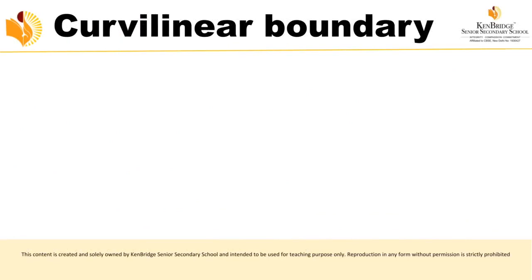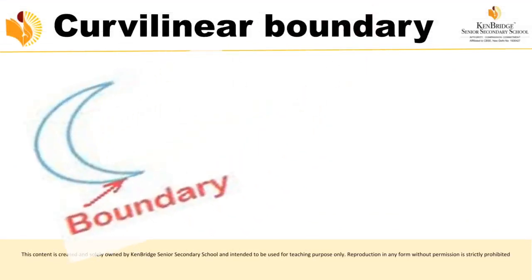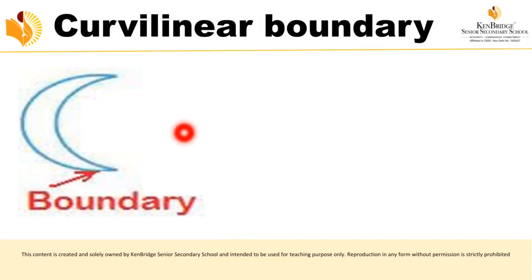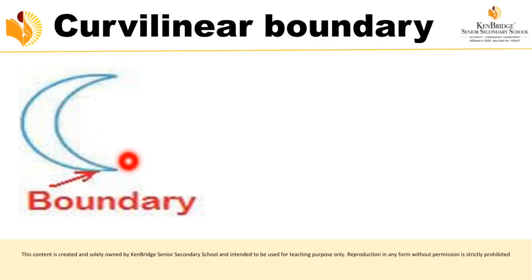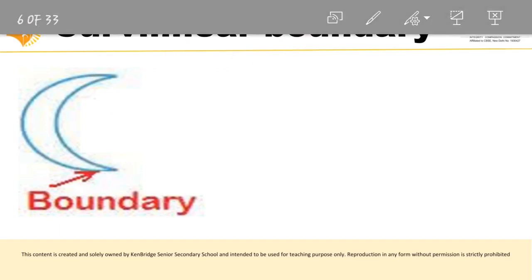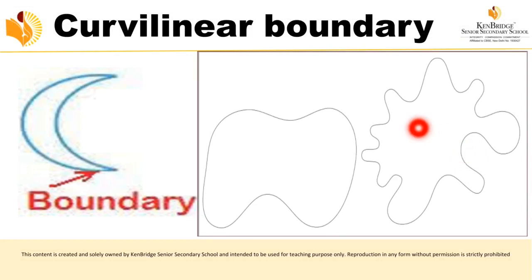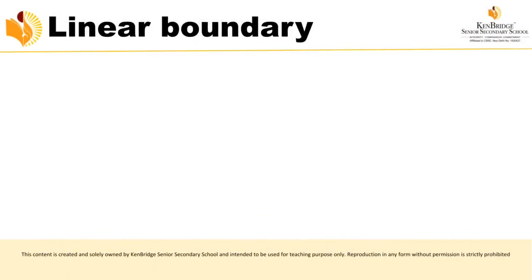Now we are going to see about curvilinear boundary. The outline of a figure is called its boundary. If the boundary of the shape is made up of curved lines, that is called a curvilinear boundary. Whatever closed shapes whose outline is made up of curved lines will be called curvilinear boundary.